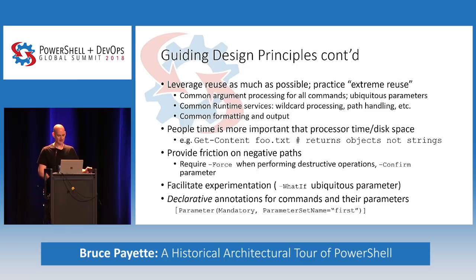We wanted to facilitate experimentation — it should be safe to try out commands. So we have the what-if ubiquitous parameter. And then we have declarative annotations for commands and their parameters, so the logic for binding parameters and doing checking is done declaratively through a set of attributes rather than everybody writing their own null checks.